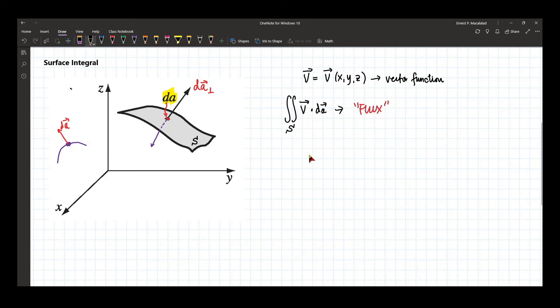And in our class, in this module at least, one of the examples or one of the application of the surface integral is when we use Gauss's law. Because Gauss's law pertains to what we call the electric flux. And you're already familiar with the integral form of Gauss's law. Integral form of the Gauss's law is the closed integral of E, the electric field, dot dA, and that is equal to the enclosed charge divided by epsilon sub zero.